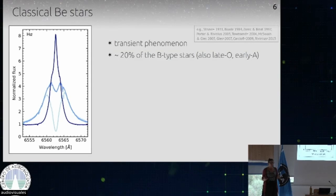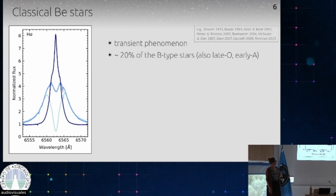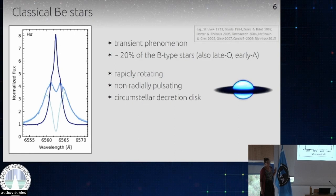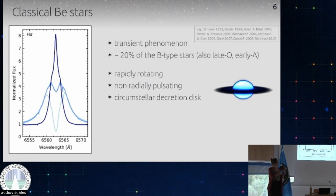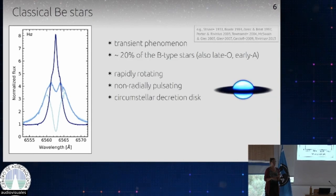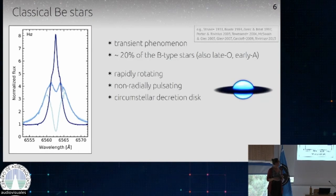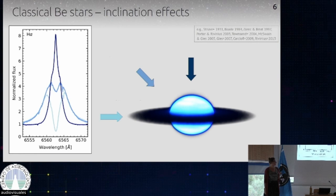It also occurs in late O-types and early A-type stars. A lot of observations using different techniques have shown that the physical nature of these stars is the following: they are rapidly rotating — how rapidly is not really clear, but quite rapidly. They are also pulsating, showing non-radial pulsations. And the emission line feature we see in the spectra comes from a disk — not an accretion disk, but basically the opposite: a decretion disk, in which material moves outwards. Depending on the viewing angle, you get a different spectral signature.